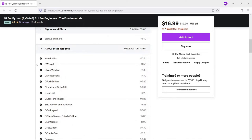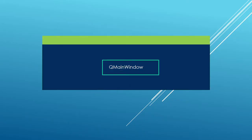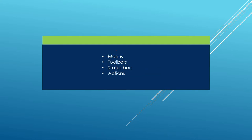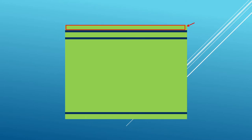In this lecture we are going to explore the QMainWindow class. This is a class that allows us to work with things like menus, toolbars, status bars, and actions. What this gives us is a window that has components we can customize. In many graphical user interface applications we have a menu bar on top, and below that a toolbar containing things we can click on to make things happen.